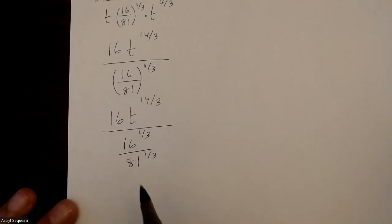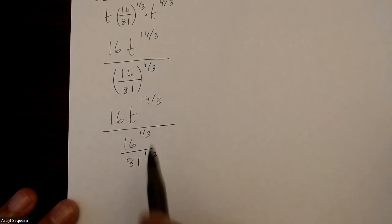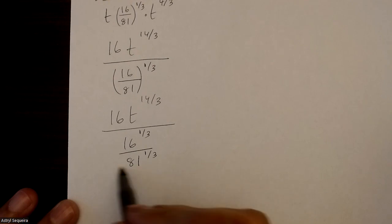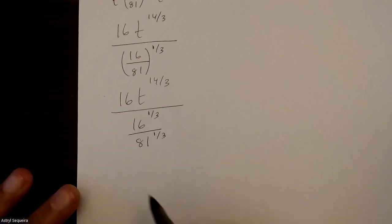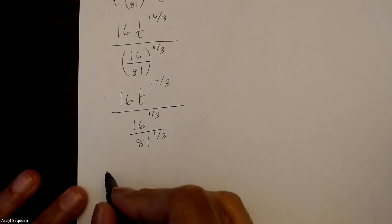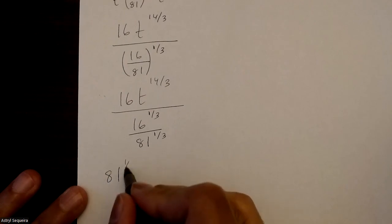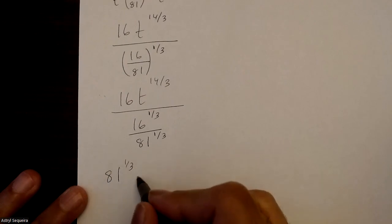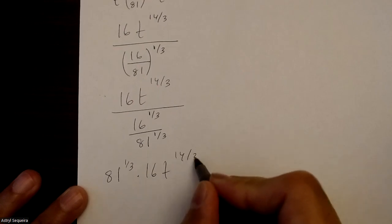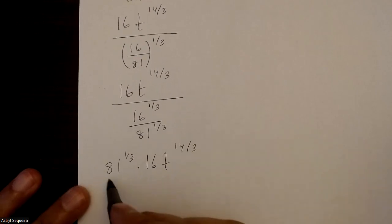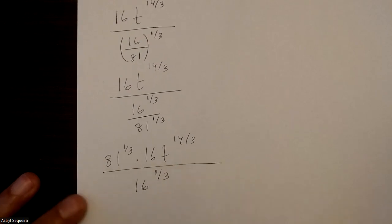And now if you have a number divided by a fraction, you know that you can bring the bottom of the fraction all the way to the top. So this can be written as 81 to the power of 1 over 3 times 16t to the power of 14 over 3, divided by 16 to the power of 1 over 3.